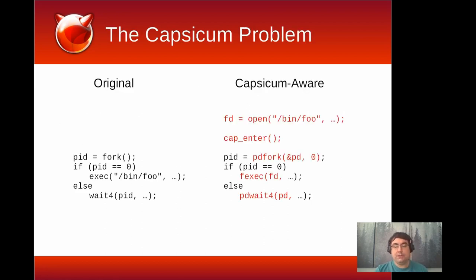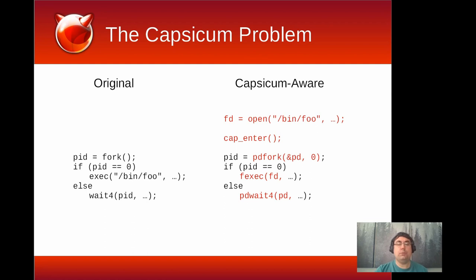Let's dig a little deeper into what we might call the Capsicum problem. On the left-hand side of this slide, I show some sample code. We fork, we exec some executable, and the parent waits for the child to complete. In order to successfully run this in a Capsicum sandbox, it requires pretty extensive modifications. First, we have to pre-open the executable that we want to run.